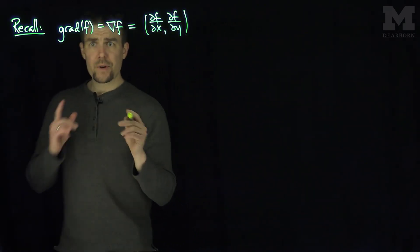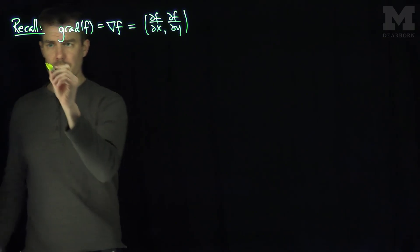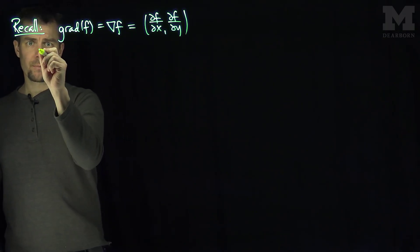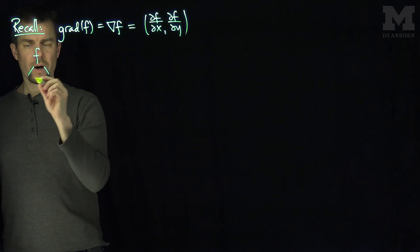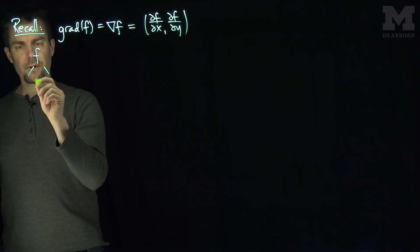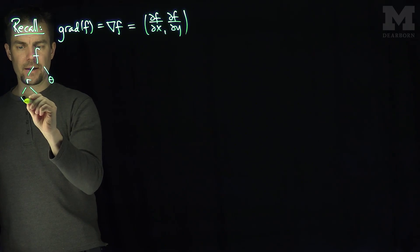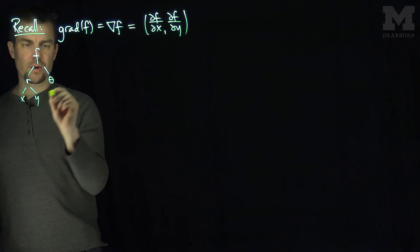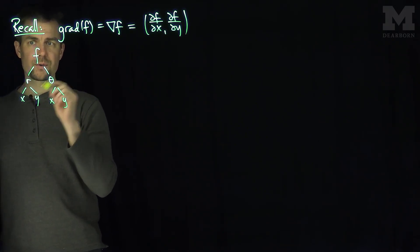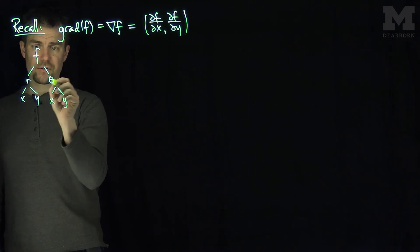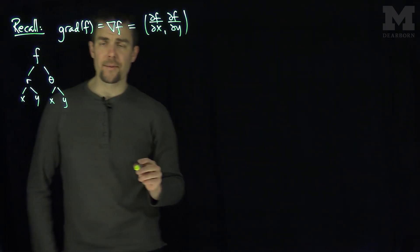To do that, we need to find the corresponding relationship using the chain rule. We have f as a function of r and θ, where r and θ depend on x and y.